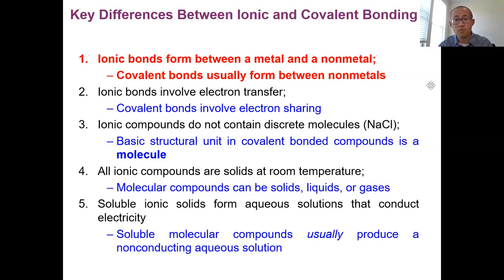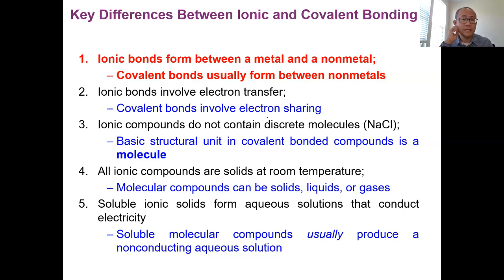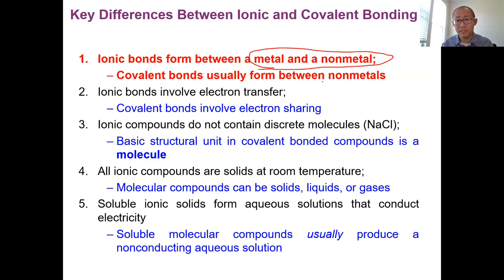Let's do a quick overview comparing these two types of bonding. There's no definite cut between these two types — we're learning these two extreme types of bonding characteristics. The most important thing to understand is what types of elements are involved in each. Ionic bonding is mostly between a metal and a non-metal element, because you need a metal to lose electrons and a non-metal to gain them. For covalent bonding, because there's no transfer of electrons, we're usually looking at bonding between non-metal elements.